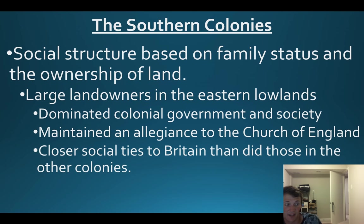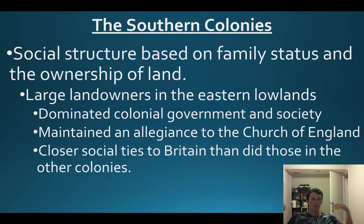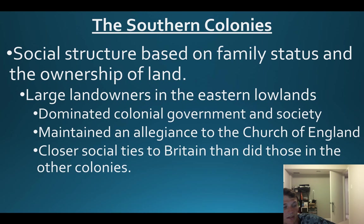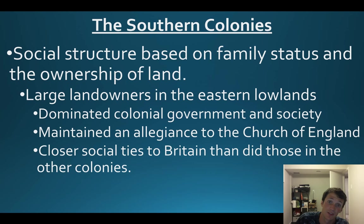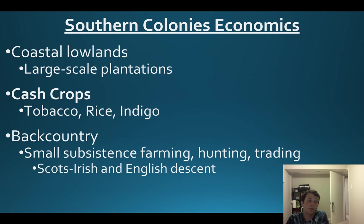Home stretch - southern colonies: Maryland, Virginia, North Carolina, South Carolina, and Georgia. We talked about family status and ownership of land. These wealthy aristocratic people that had been there a while are going to dominate colonial government and society. Some maintain allegiance to the Church of England and England itself, so when the American Revolution happens there will be a lot more loyalists to the British crown down here.